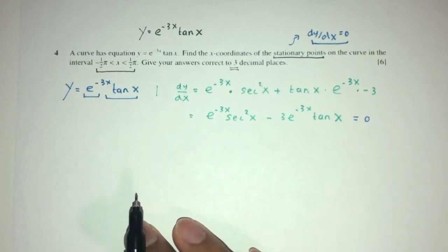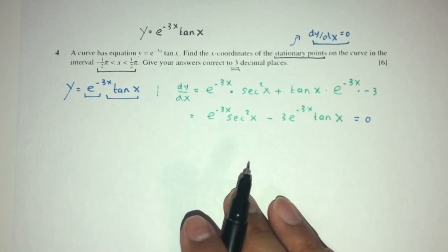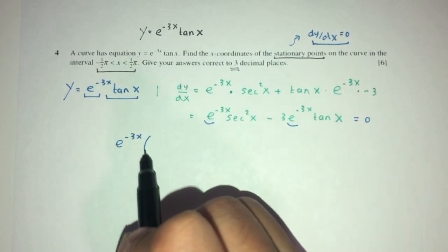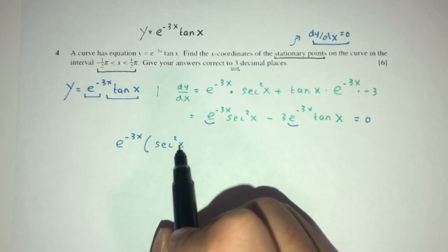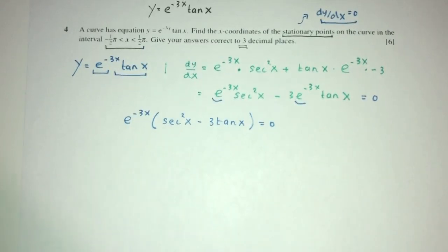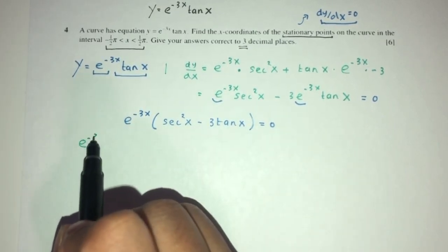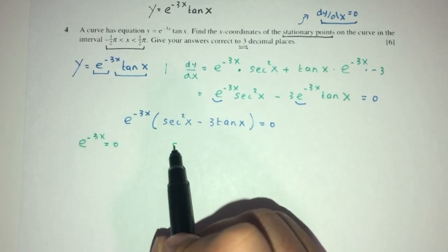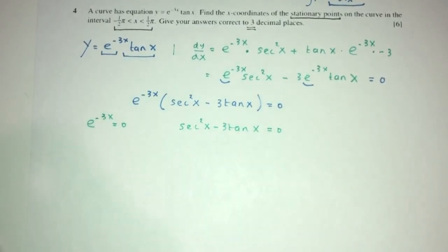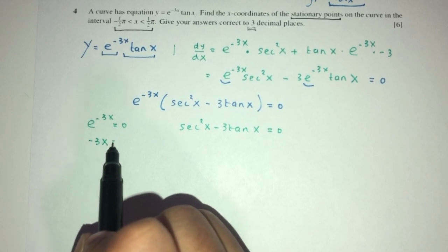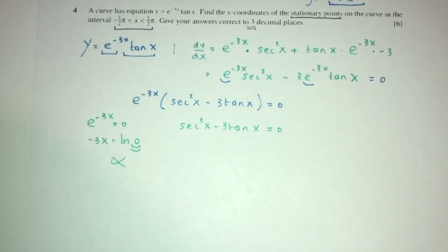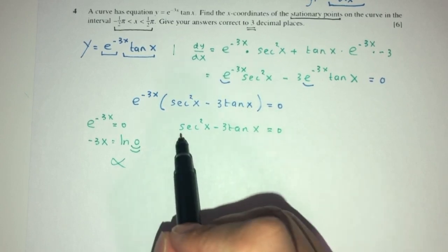Now obviously we have to equate that to 0 to find the stationary points. We'll try to factorize. We have e to the minus 3x common, so you will have e to the minus 3x outside, and then you will have sec squared x minus 3 tan x equal to 0. Now here we can have e to the minus 3x equals 0, but that would give ln of 0, which is not possible. So we can only solve sec squared x minus 3 tan x equals 0.